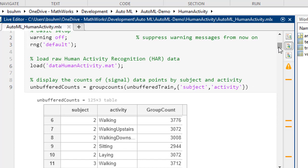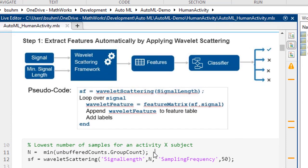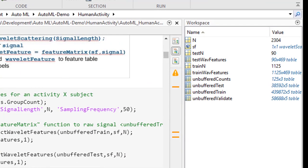The remainder of the video walks you through the steps of AutoML in MATLAB. First, to obtain relevant features from signal or image data, you can decompose signals with wavelets. Using predefined wavelet and scaling filters, the feature matrix function applies wavelet scattering to buffers of signal.